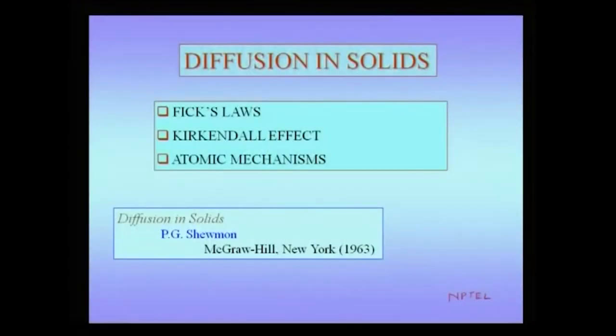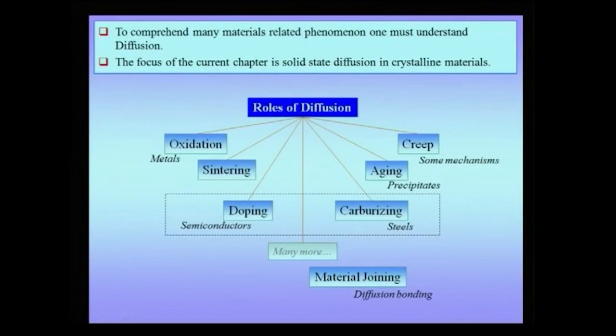So far we have been talking about certain aspects of crystals and other structures wherein there is no time element — the structure is given to you with defects and that is what it remains. Here, we bring in certain kinetic aspects when we talk about diffusion of solids. This will be a brief excursion from the usual theme of the lectures, but it is important for us to understand how a material changes its composition with time and what are the important implications in terms of the science of the material and technological applications. In this context we will talk about Fick's laws and certain atomic mechanisms which underlie the diffusion process.